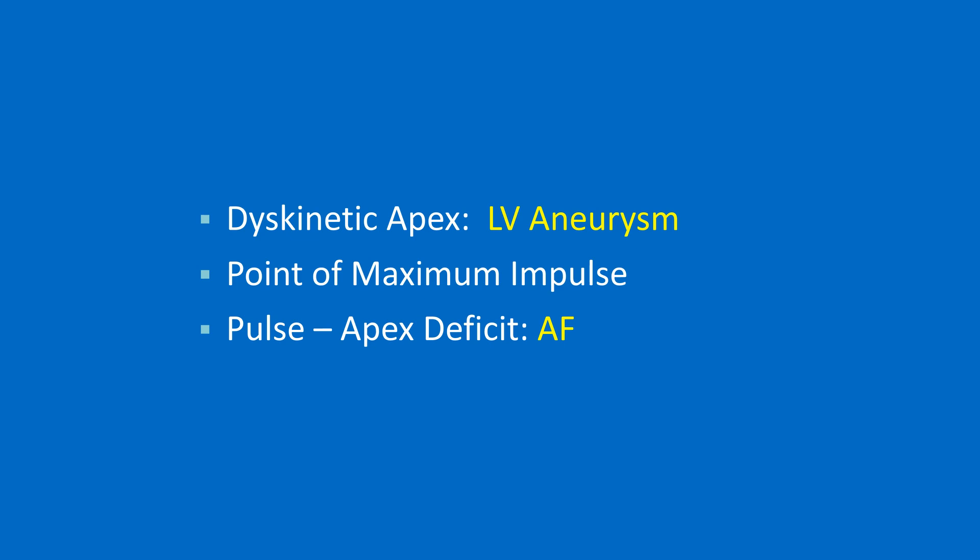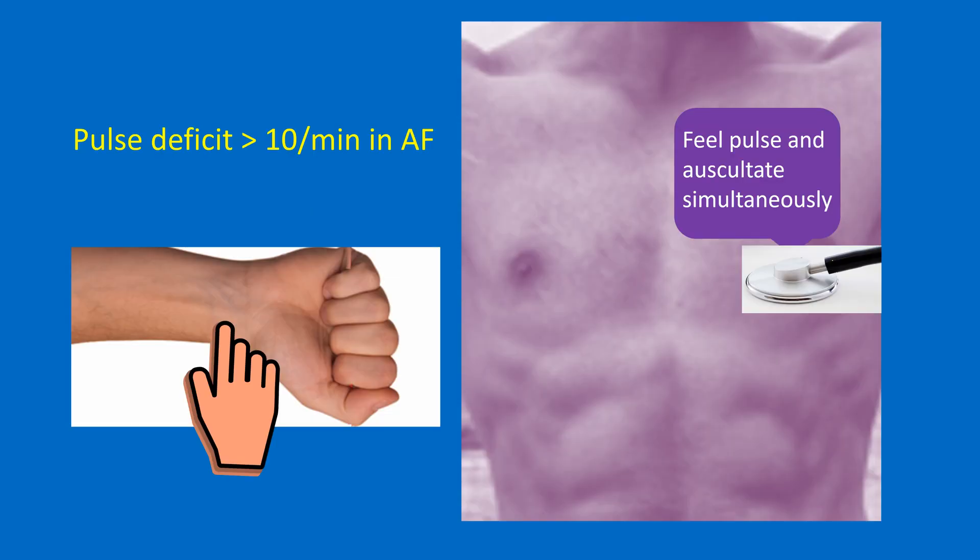Dyskinetic apex in left ventricular aneurysm is a seesaw pulsation with an additional out-of-phase bulge above the lowest impulse. Point of maximum impulse is sometimes checked when the apical impulse is diffuse and difficult to localize. Pulse-apex deficit is a term used in atrial fibrillation to note the difference between pulse rate and the rate of apical impulses, usually more than 10 per minute, as all beats may not have a good pulse in the fast irregular rhythm. Double and triple apical impulses may be felt in hypertrophic obstructive cardiomyopathy, where one of the impulses may be diastolic — the palpable component of a loud fourth heart sound due to forceful atrial contraction.